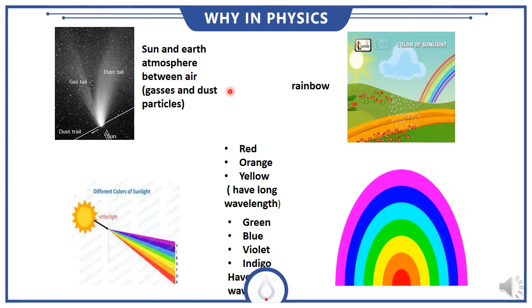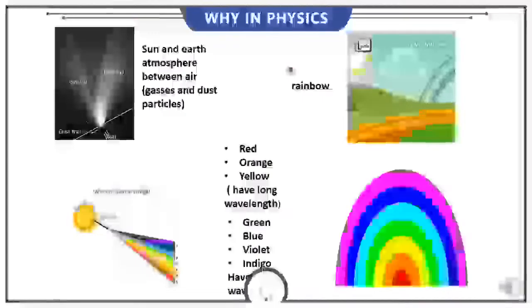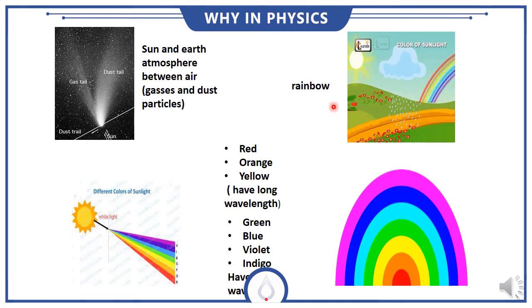We know that when we look at the sun during the day, it normally appears white. But at sunrise and sunset, the color changes. We know that sunlight is made of seven colors.